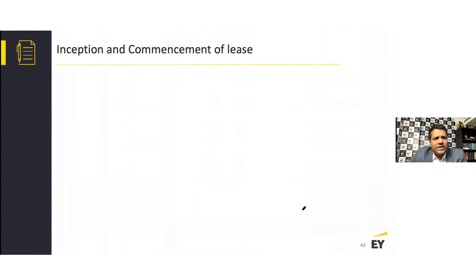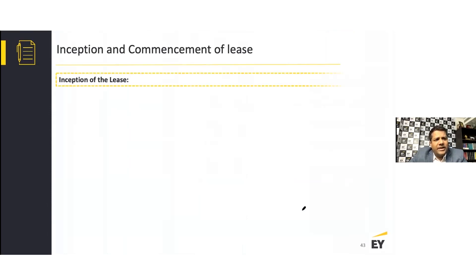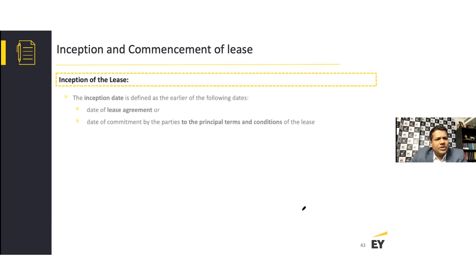Now we discuss the nuance between inception and commencement. Inception of the lease is defined as the earlier of: the date of the lease agreement, or the date of commitment by the parties to the principal terms and conditions of the lease. Commencement date is the date on which a lessor makes the underlying asset available for use by a lessee. For example, you may sign the agreement today (inception), but possession of the building begins on 1st December — that becomes the lease commencement date.